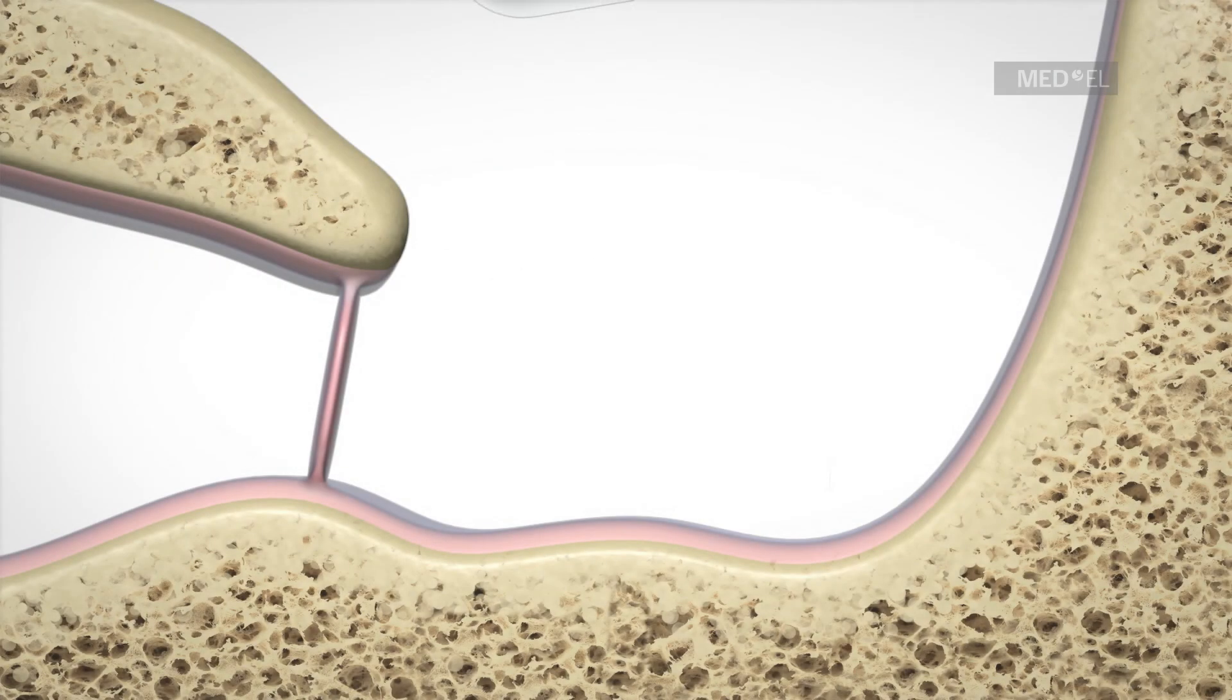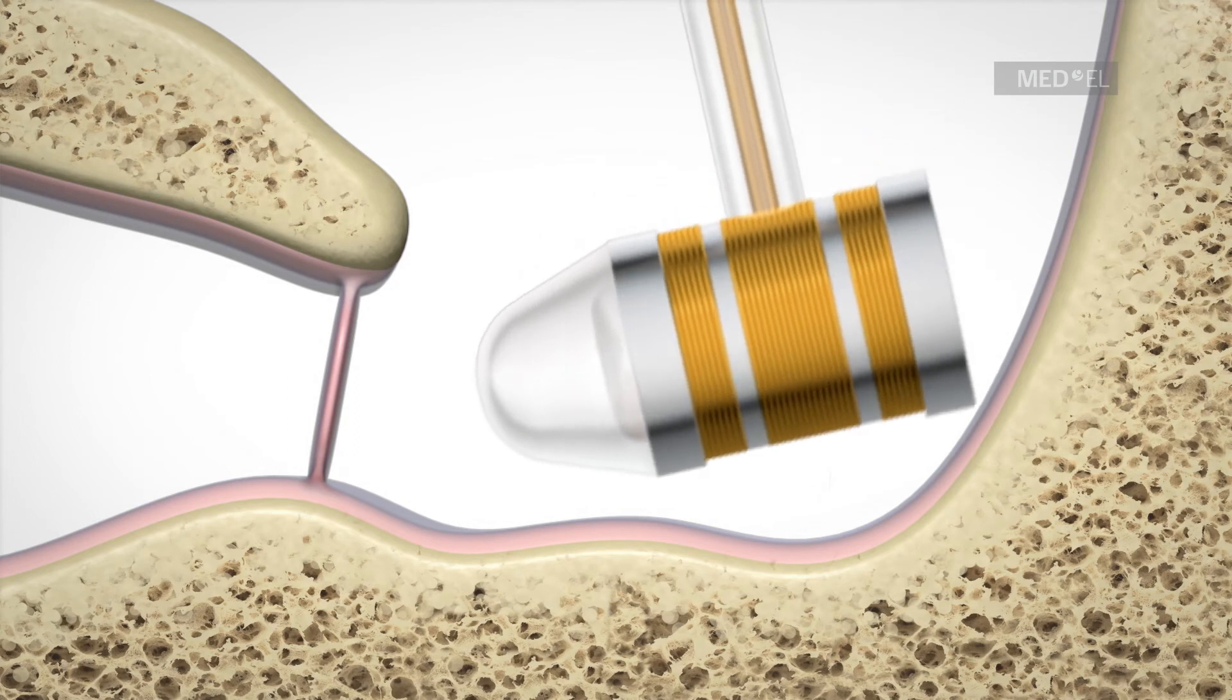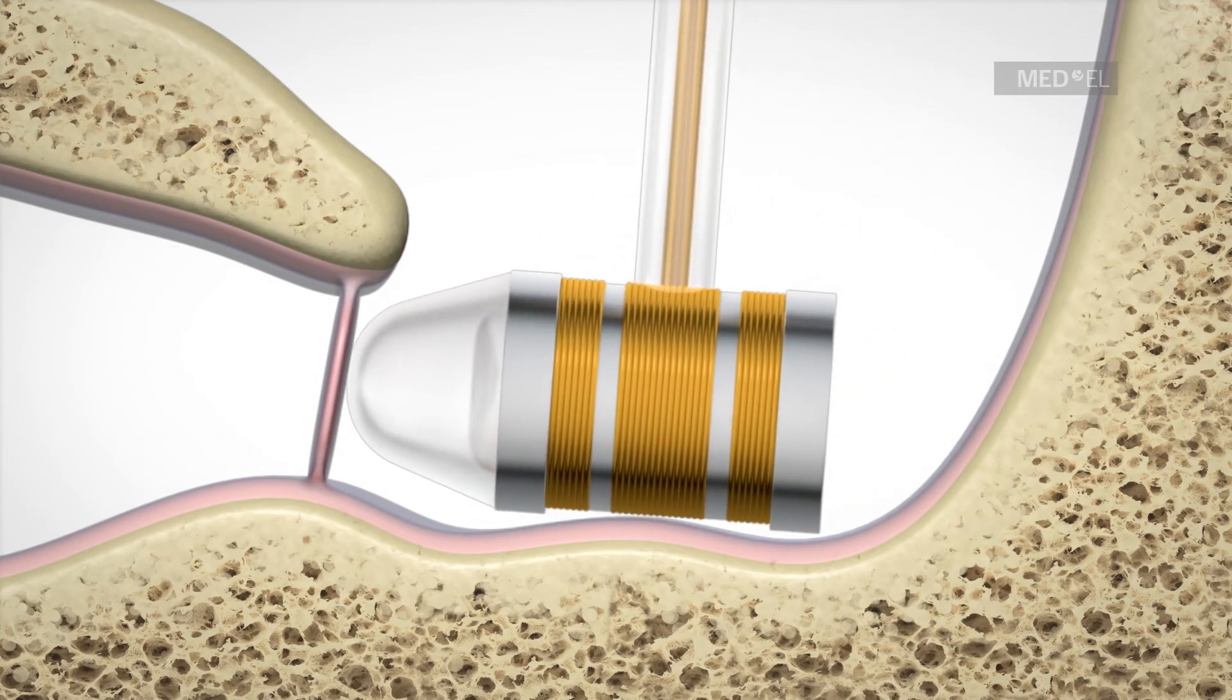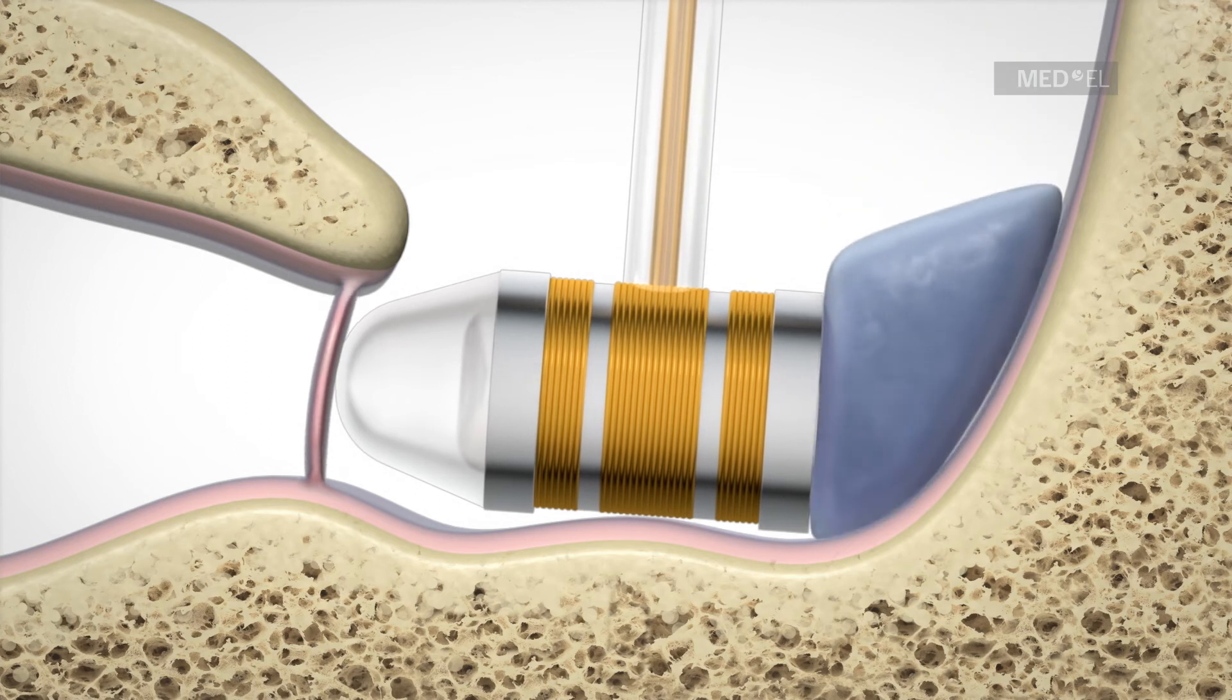The round window soft coupler is for placement on the round window membrane. It is stabilized by inserting a piece of cartilage behind the FMT assembly.